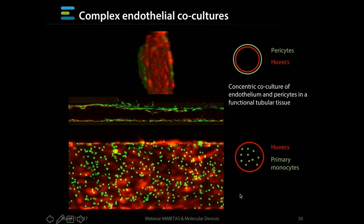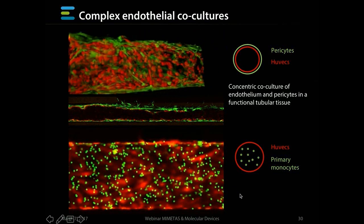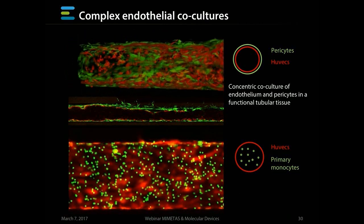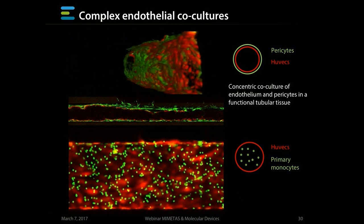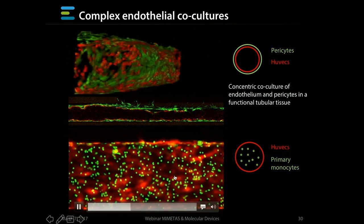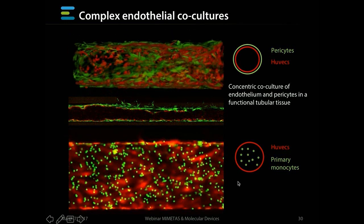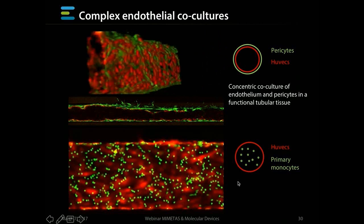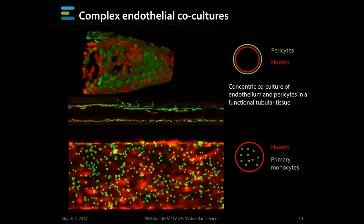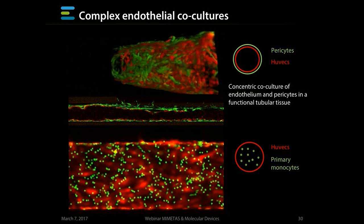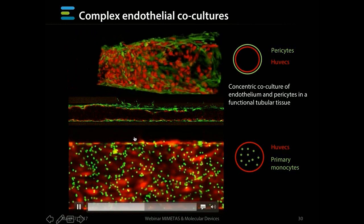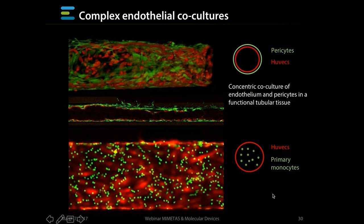We have entered vital dye-stained primary monocytes into a HUVEC tubule, and we can use these models to assay for monocyte attachment and also monocyte transmigration through the blood vessel wall into the adjacent compartment of the organoplate.